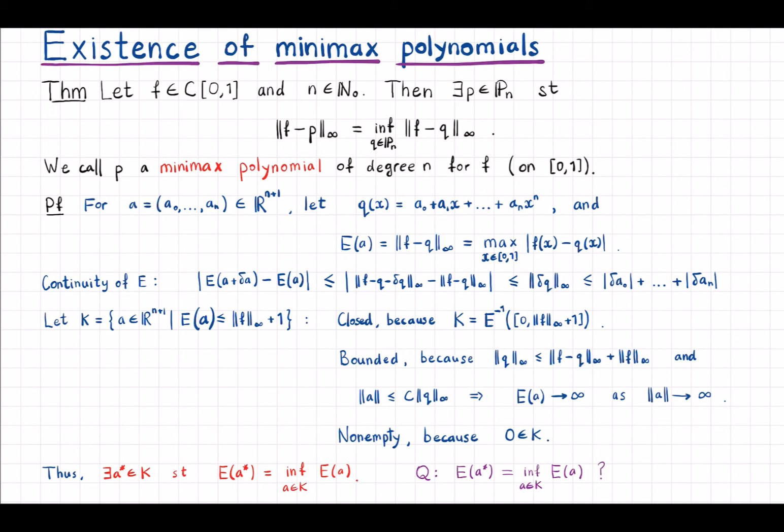Now we claim that this set K is closed, bounded, and non-empty. It's closed because this is the inverse image of this closed interval zero to the uniform norm of f plus one under the mapping E, and E is continuous so K is closed.